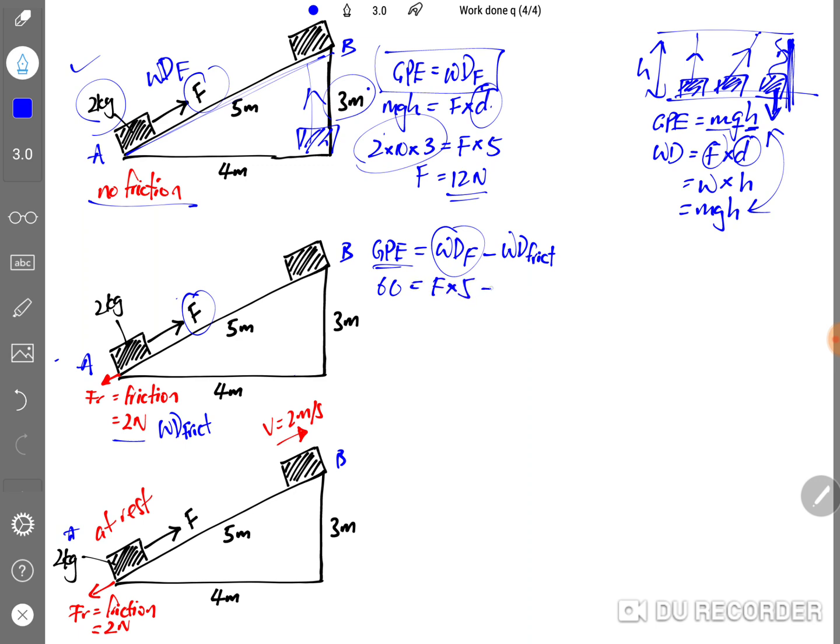So now force times 5 minus away friction which is 2 times the distance 5 also, because this friction and this will be the distance moved in the direction of the friction. So if you solve this, F will be 14N which is higher and that's correct.